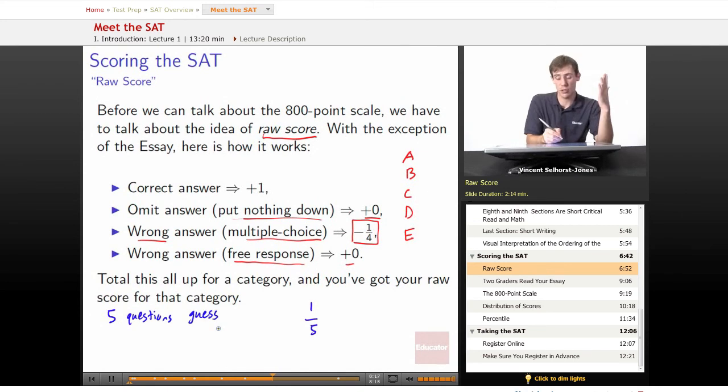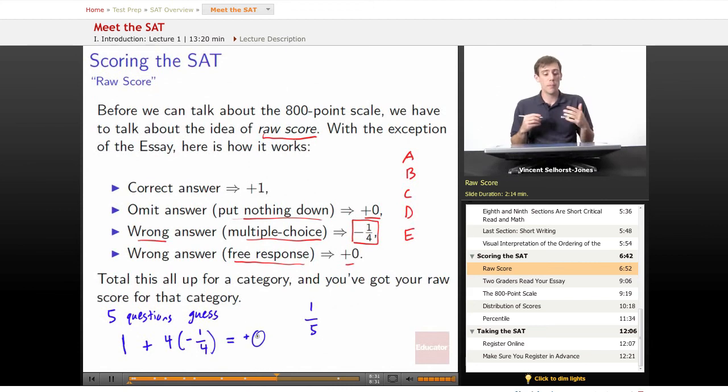Imagine you guess on five questions, just completely guessing, totally random. Then on average, if you guessed five times, you're going to get one question right, and you're going to also get four questions wrong. And since each question is minus a quarter, that's going to be a total of zero points added. So this multiple choice taking off points when you get it wrong, the point of that isn't so much to penalize you, to hurt you. The point of that is to make it so that there's no benefit to guessing, so that random guessing, uneducated guessing doesn't increase your score.